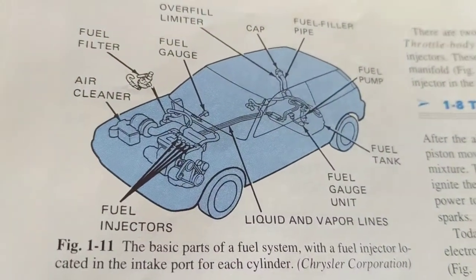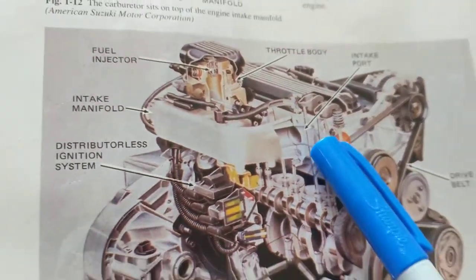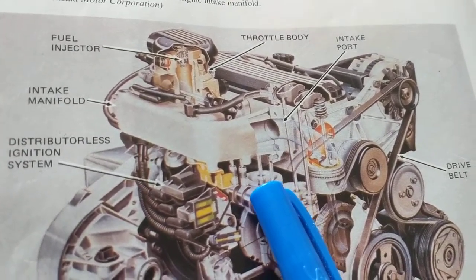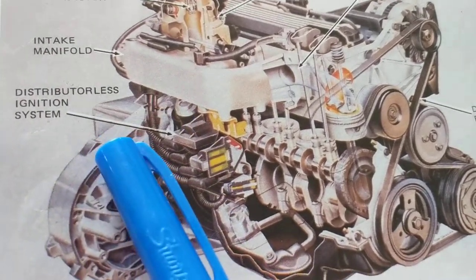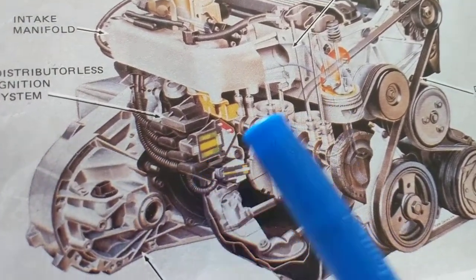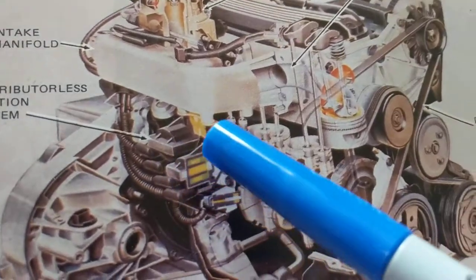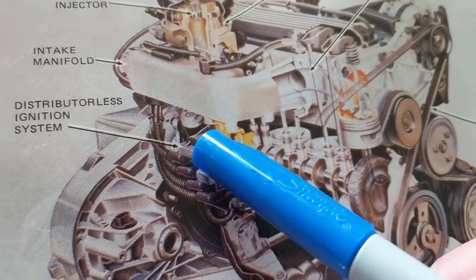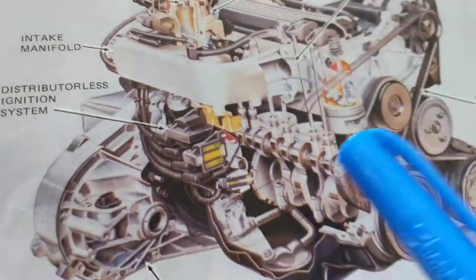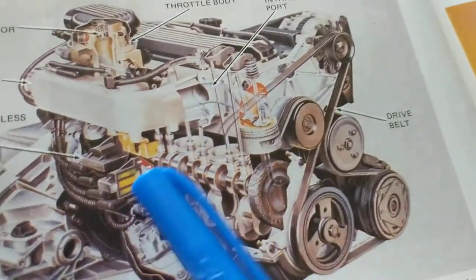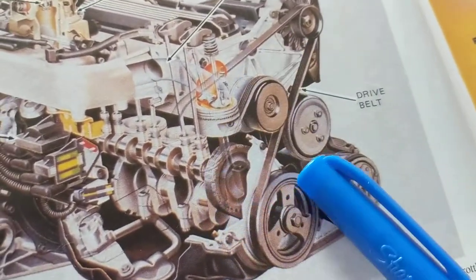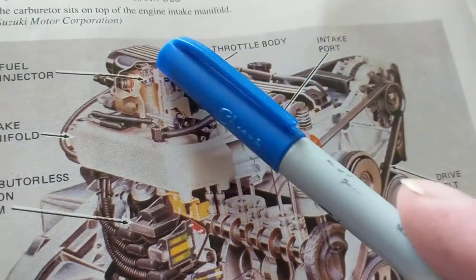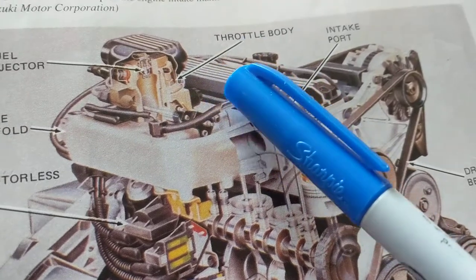I'll talk more in depth about the engine in a while. There is a distributor system and a distributorless system where there is no distributor. As we saw in the other video, we have an ignition coil pack where one coil fires two spark plugs. This over here is the coil pack, and this is all the pulleys and drive belt. Over here on this side is the throttle body, where the air goes into the air intake system.